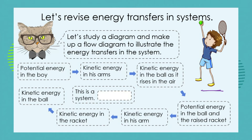We know that the boy has potential energy — remember that is chemical potential energy derived from the food that he ate. That potential energy works within him, within the energy store, to allow him to grow and do all sorts of things. But in this particular diagram we're seeing that energy being transferred to kinetic energy in his arms.